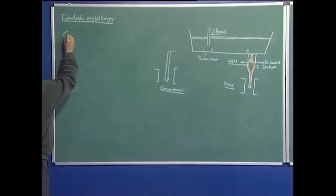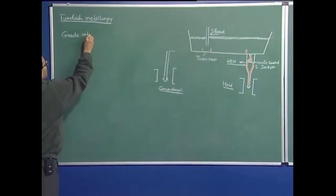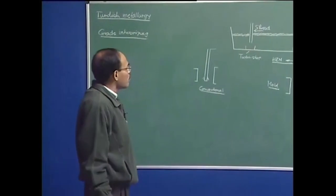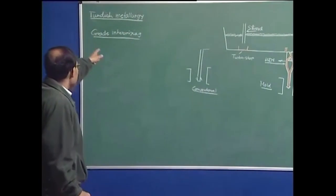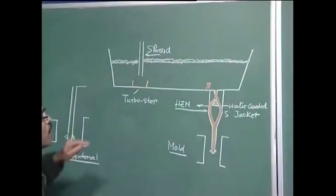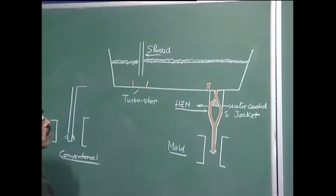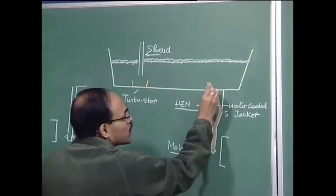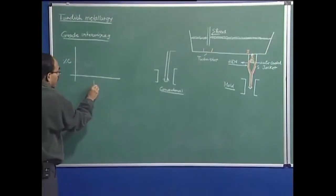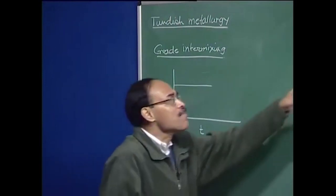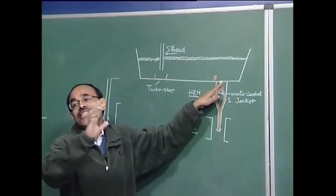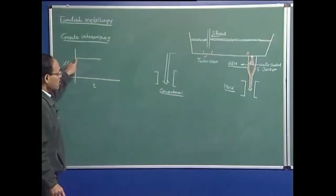We have talked about inclusion flotation, heating of the melt, superheat and its importance, and how to control superheat. Now let us talk about grade intermixing. Suppose you have a ladle and material is flowing through the Tundish. If I measure concentration — say in terms of carbon percentage — and plot it versus time, I will see that percentage carbon remains constant because the same grade of steel is being cast and its composition is uniform.